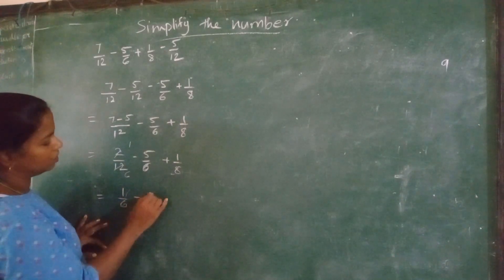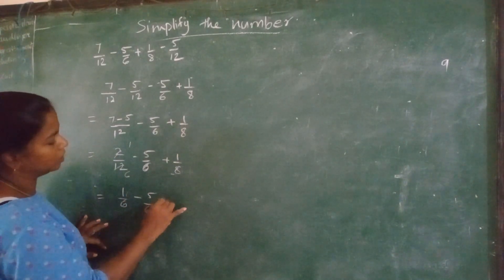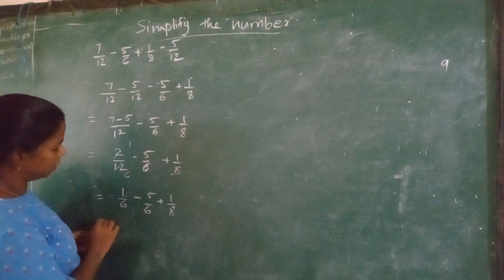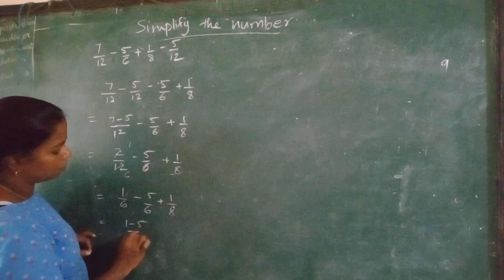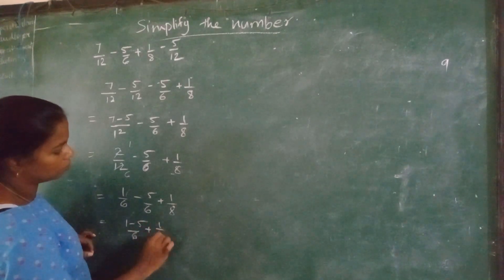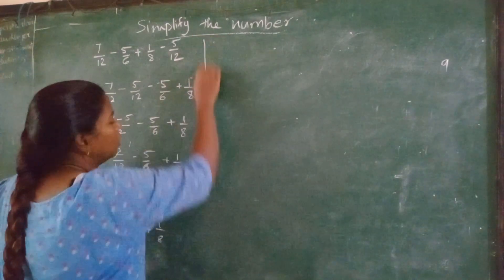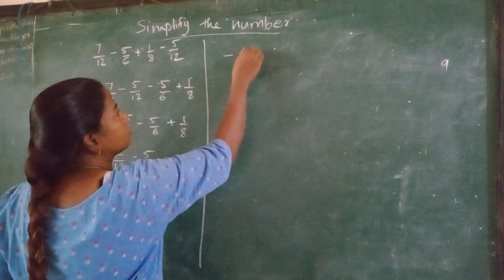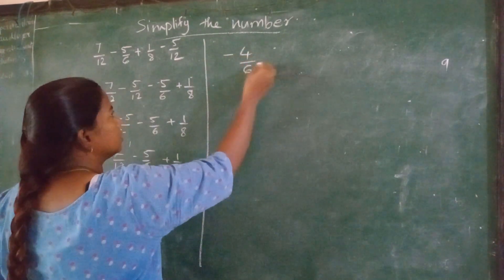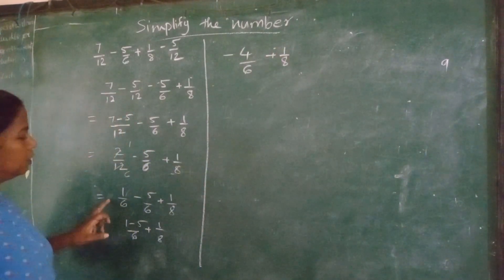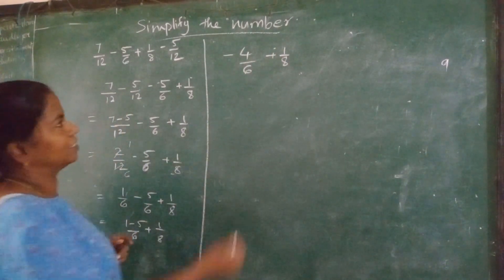Now this common, 1 minus 5 upon 6 plus 1 upon 8. So 1 minus 5 is how much? Minus 4 upon 6 plus 1 upon 8. Am I correct? Yes. Understood?